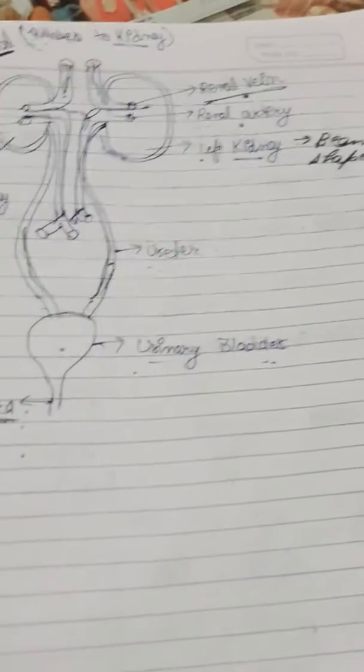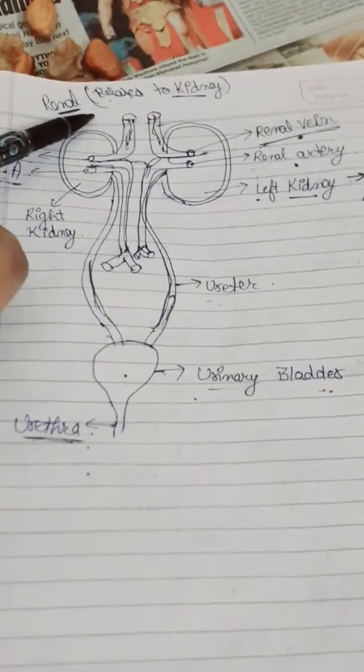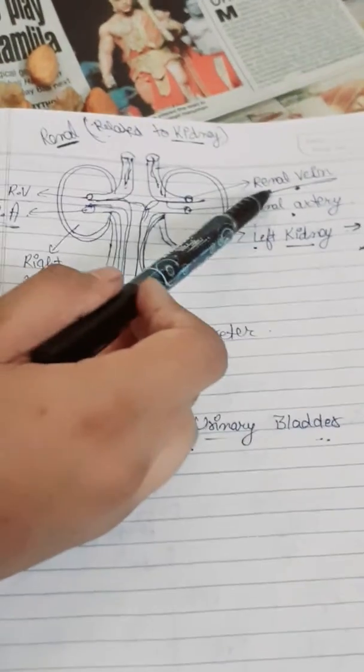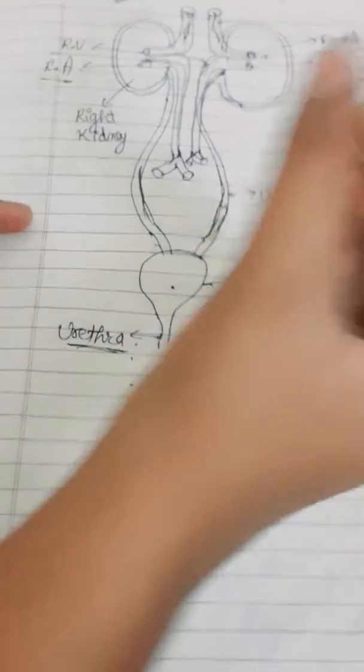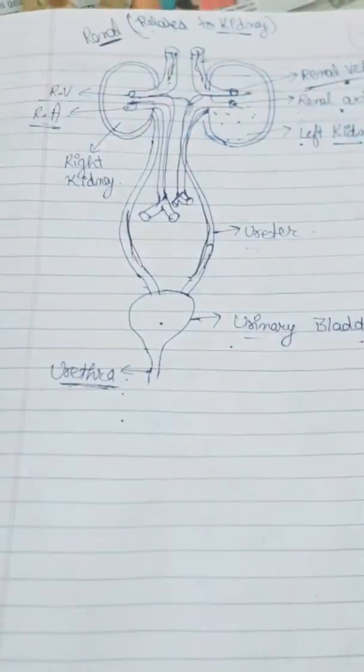You can also see the inferior vena cava and the aorta artery. The aorta artery carries oxygenated blood from the heart to the kidney, and the inferior vena cava carries deoxygenated blood from the kidney to the heart.